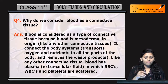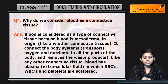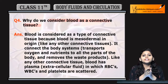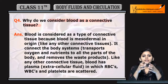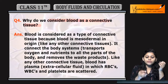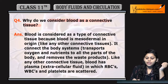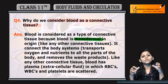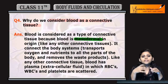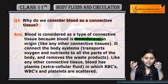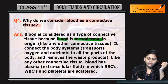Question number 4: Why do we consider blood as a connective tissue? Blood originates from the mesodermal lining — it has mesodermal origin.